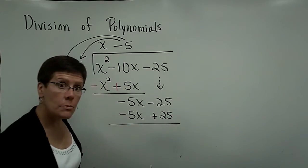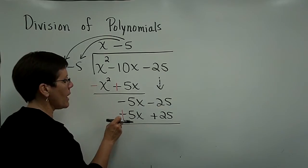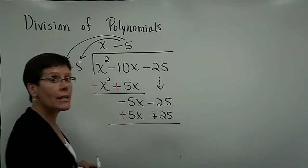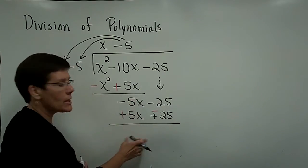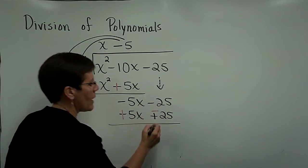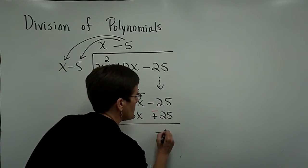And I'm ready to subtract these, so I have to add the opposite. So this one becomes a positive and this one becomes a negative. Those do add to be nothing. But this negative 25 and that negative 25 is a negative 50.